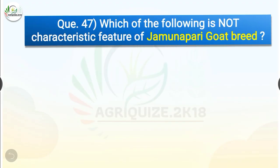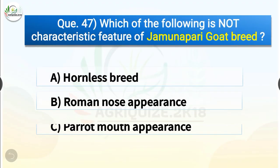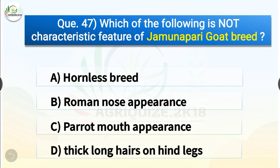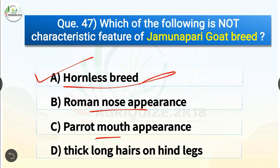Question number 47. Which of the following is not a characteristic feature of Jamunapari goat breed? The options are hornless breed, Roman nose appearance, parrot mouth appearance, or thick long hairs on hind legs. The correct answer is option A, hornless breed. So hornless breed is not a characteristic feature of Jamunapari — whereas Roman nose appearance, parrot mouth appearance and thick long hair on hind legs are characteristic features of Jamunapari goat breed.